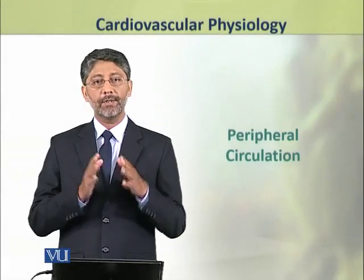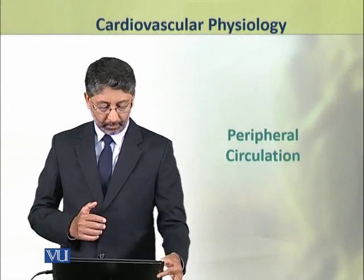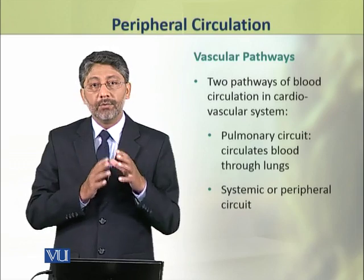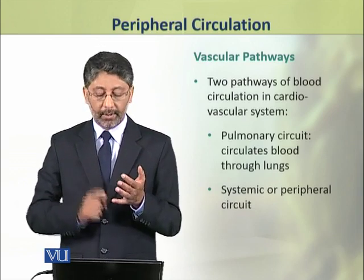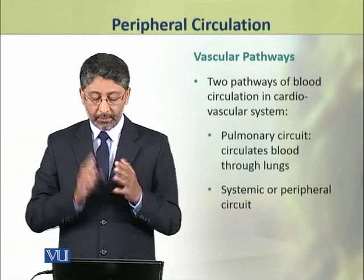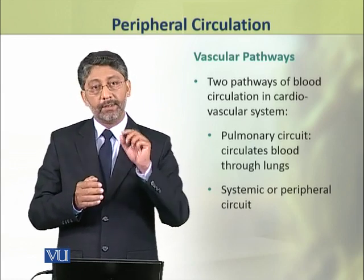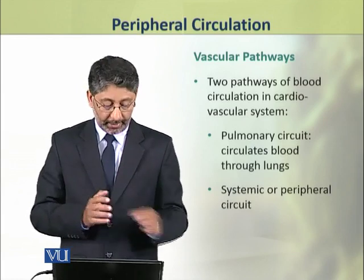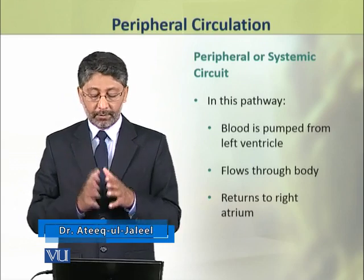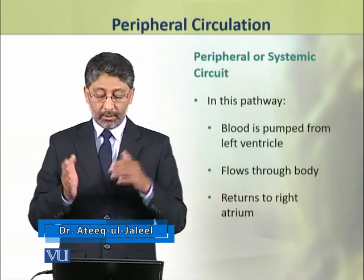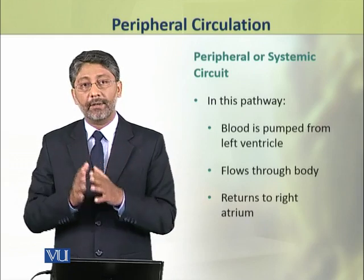Dear students, in this topic we shall discuss the peripheral circulation. In the cardiovascular system there are two pathways of blood circulation: the pulmonary circuit, which circulates the blood through the lungs, and the systemic or peripheral circuit, in which blood is pumped from the left ventricle, flows through the body, and returns to the right atrium.